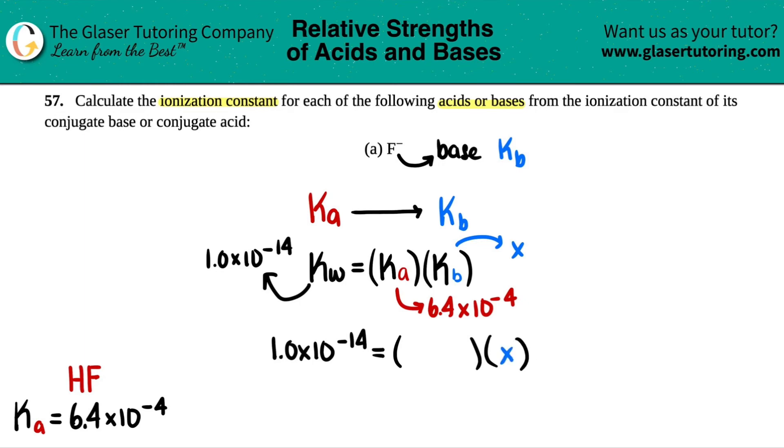We have X over here, and then we got the acid part, 6.4 times 10 to the negative fourth, and we want to just solve for X. So we divide both sides by the number, 6.4 times 10 to the negative fourth. These cancel. Beautiful. And now we're just left with X, and X was Kb.